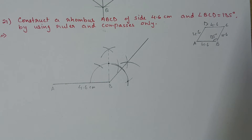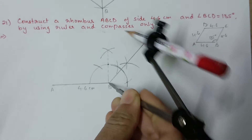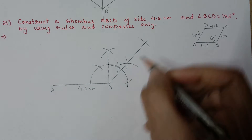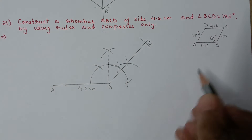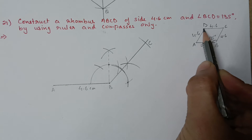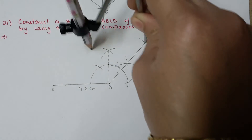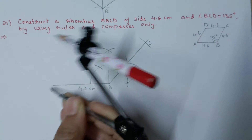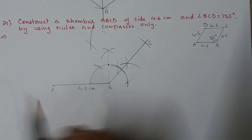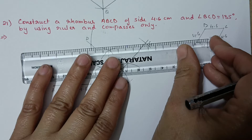Take 4.6 centimeter in the compass and put one arc along the 135 degree ray from B to get point C. To get point D, put an arc of 4.6 centimeter from A and another arc of 4.6 centimeter from C — their intersection is point D. Join all the points.